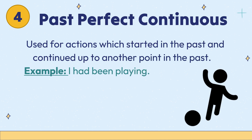The last one is past perfect continuous. It is used for actions which started in the past and continued up to another point in the past. For example: I had been playing.